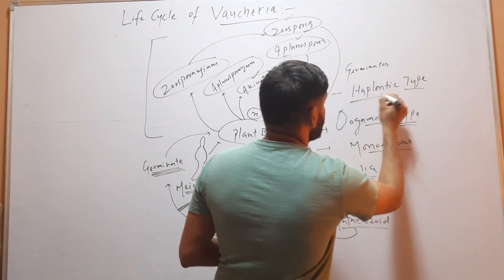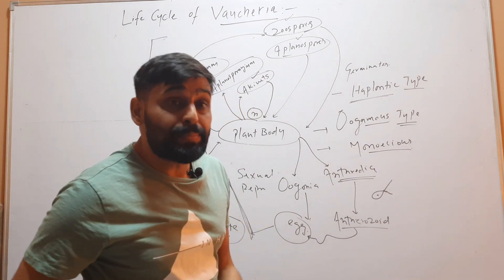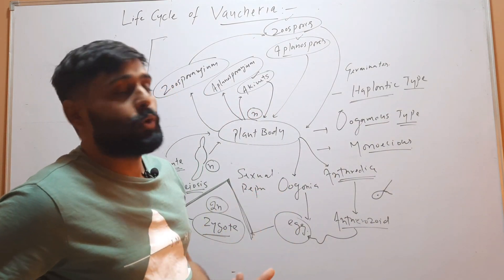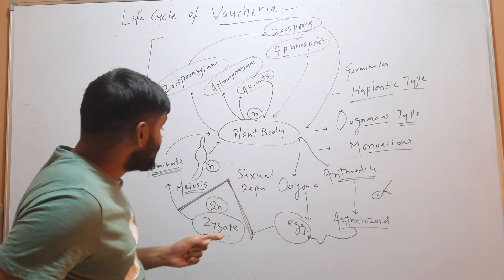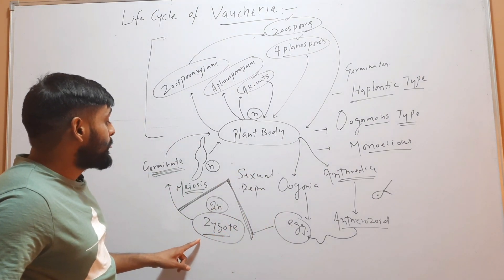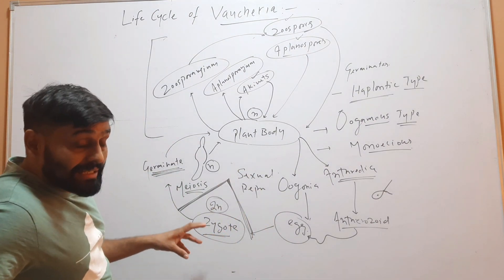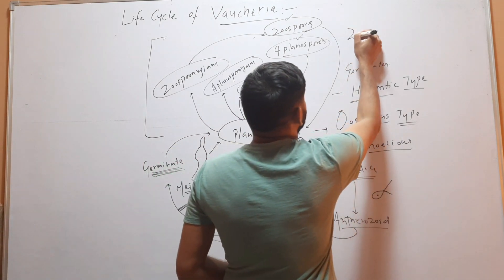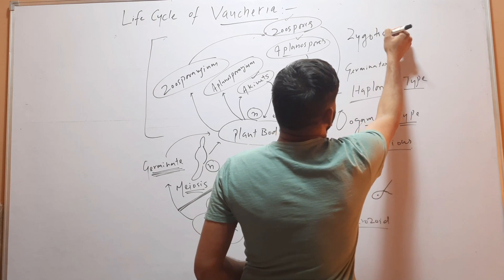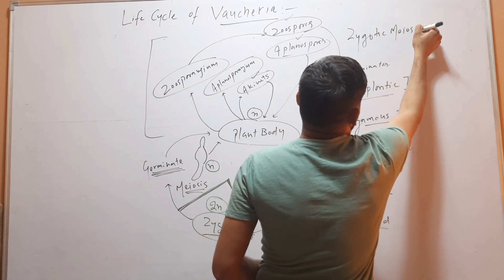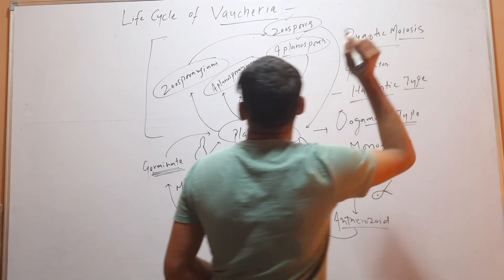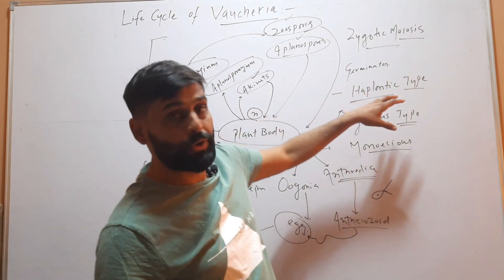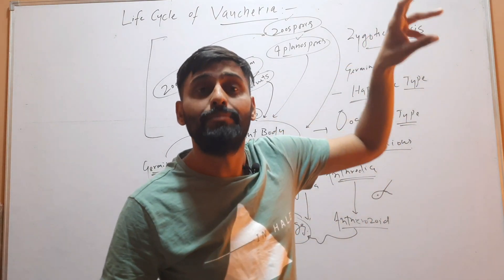Therefore, the life cycle of Vaucheria is called the haplontic type, because except for the zygote all phases are haploid, and meiosis occurs in the zygote — so it is zygotic meiosis. In summary, the life cycle of Vaucheria is haplontic type with zygotic meiosis.